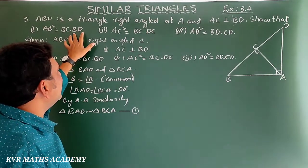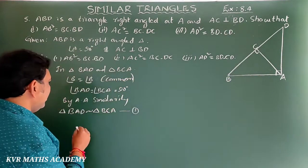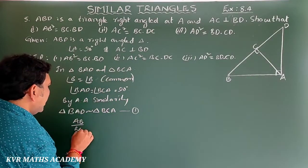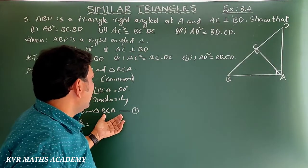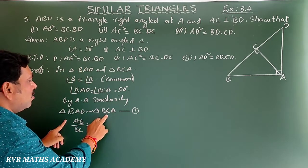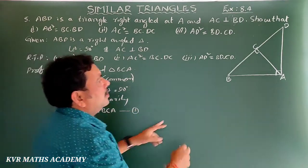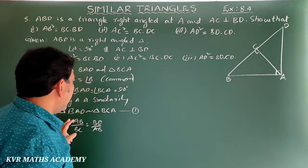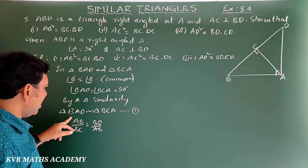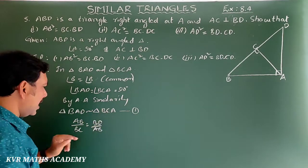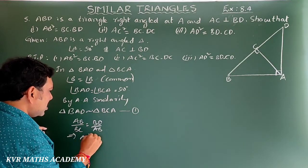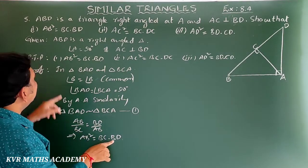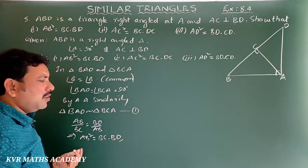Since the two triangles are similar, their corresponding sides are proportional. Therefore AB/BC = BD/AB. By cross multiplication, AB² = BC × BD. We have proved the first result.